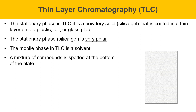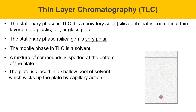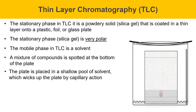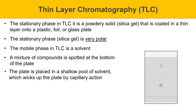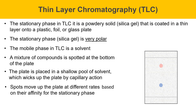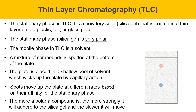A mixture of compounds is spotted at the bottom of the plate. Reference lines are drawn at the bottom and top of the plate to mark the starting and ending locations. The plate is then placed in a shallow pool of solvent, which wicks up the plate by capillary action. As the mobile phase climbs up, the spots are carried along at different rates — you can see the red spot and the blue spot moving apart from each other. The plate is removed, the solvent evaporates, and we're left with two separated spots. The more polar a compound is, the more strongly it adheres to silica gel and the slower it moves. In this example, the blue spot is more polar than the red spot and has a lower mobility.